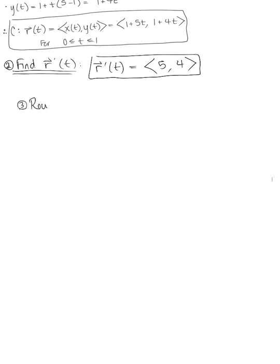We can now rewrite the vector field in terms of t. We were given our vector field F defined by the components ⟨y, x⟩. Rewriting this in terms of t, we replace y with 1 plus 4t, and we replace x with 1 plus 5t.